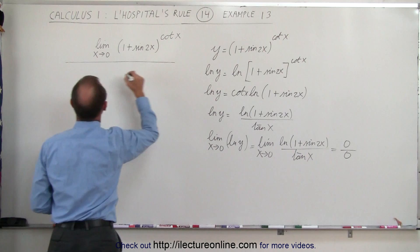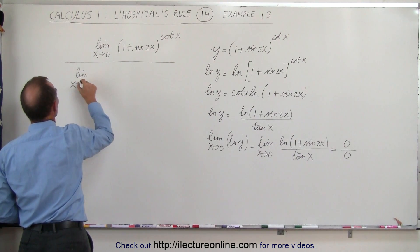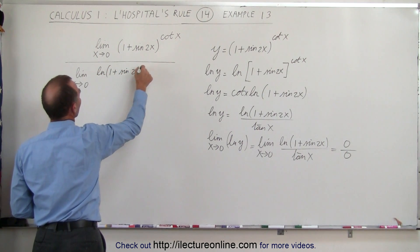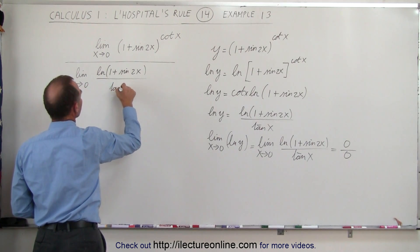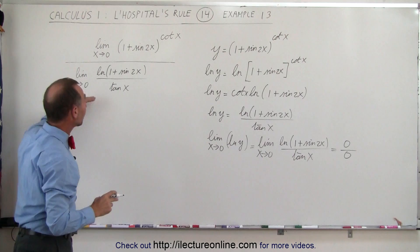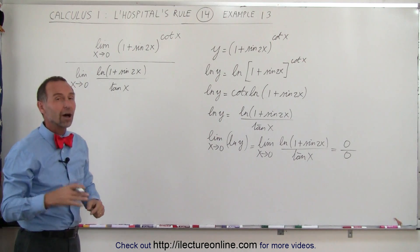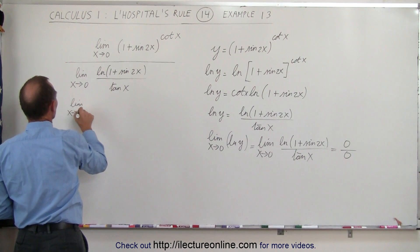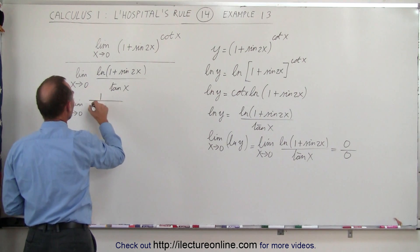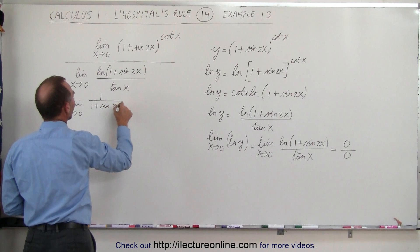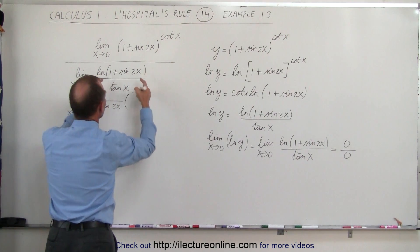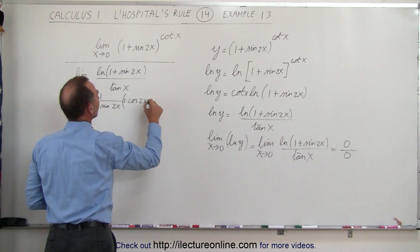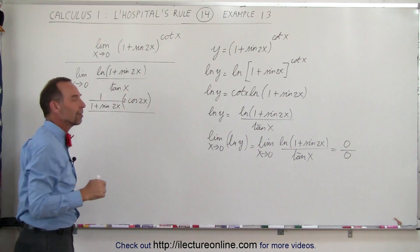We're going to take the limit as x approaches 0 of the natural log of 1 plus sine of 2x, divided by the tangent of x. The derivative of the numerator is 1 divided by 1 plus sine of 2x, times the derivative of the contents inside, which is cosine of 2x times 2. So that gives us 2 times cosine of 2x, all divided by the derivative of the tangent of x.